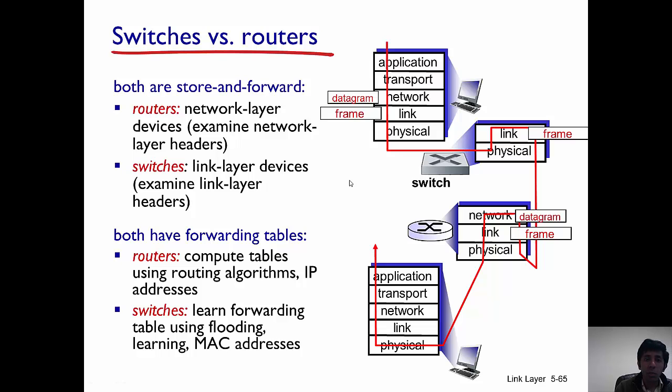I would like to conclude this video by pointing out the differences between switches and routers. Both switches and routers store and forward but the most important difference is that routers are network layer devices whereas switches are link layer devices. As routers are network layer devices, they examine network layer headers. In contrast, switches being link layer devices examine link layer headers. Next, both switches and routers have forwarding tables. However, routers compute their tables using routing algorithms and IP addresses. Switches, on the other hand, use MAC addresses and they populate the forwarding table via self-learning.